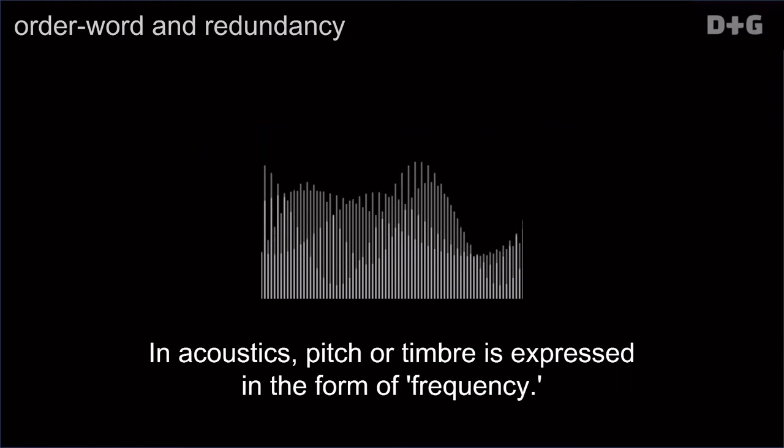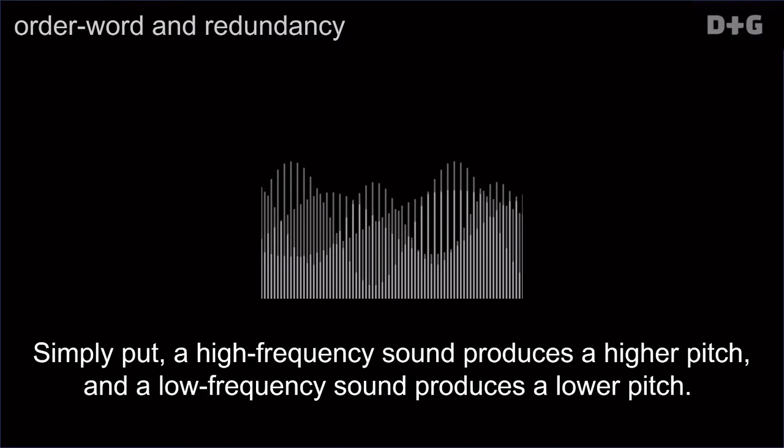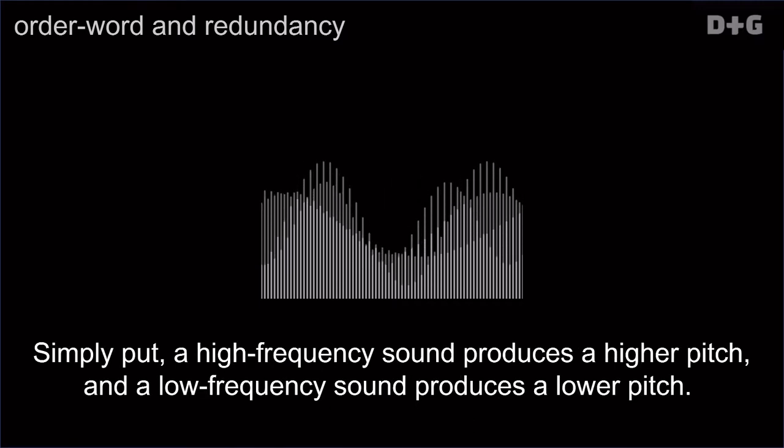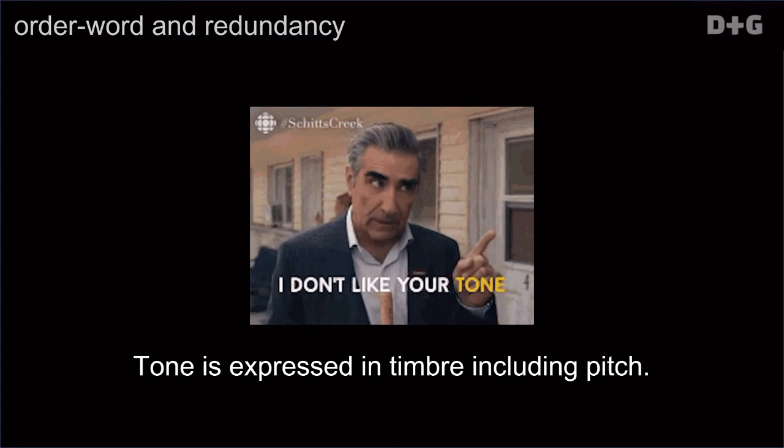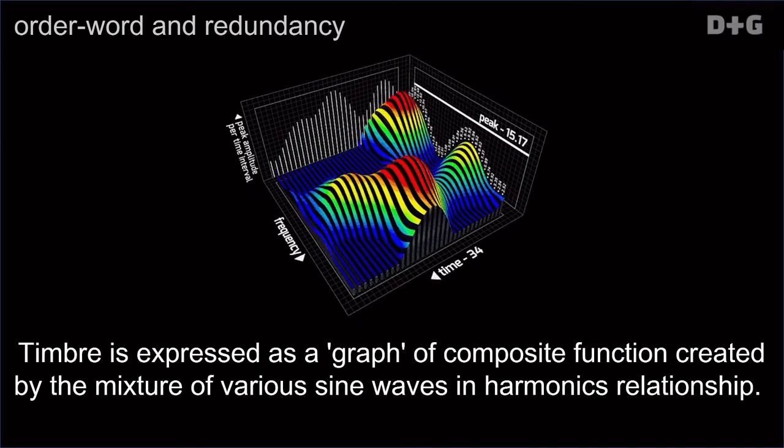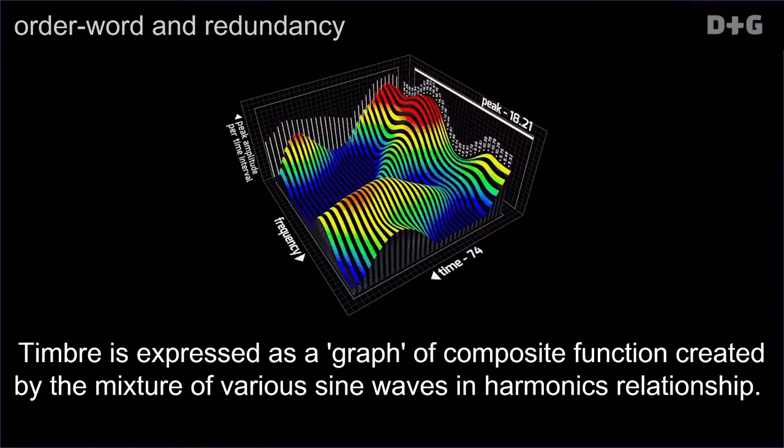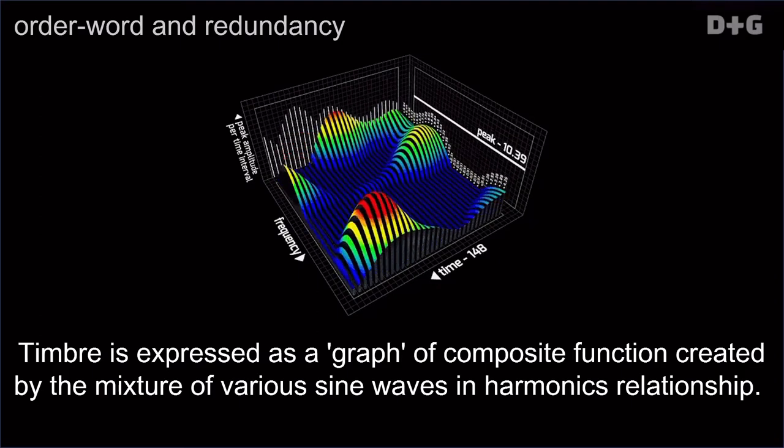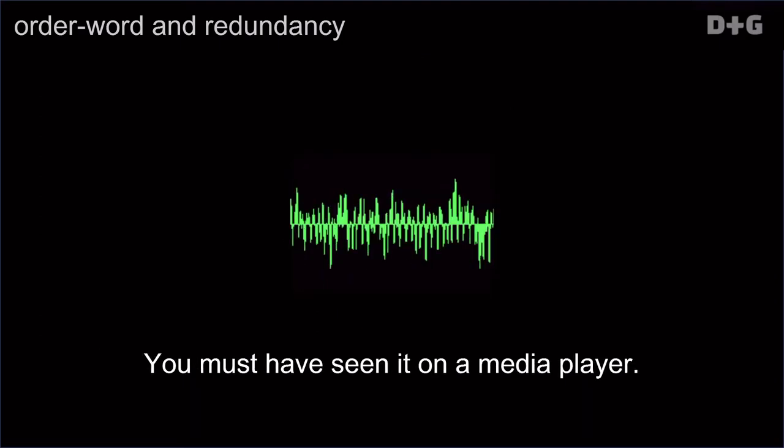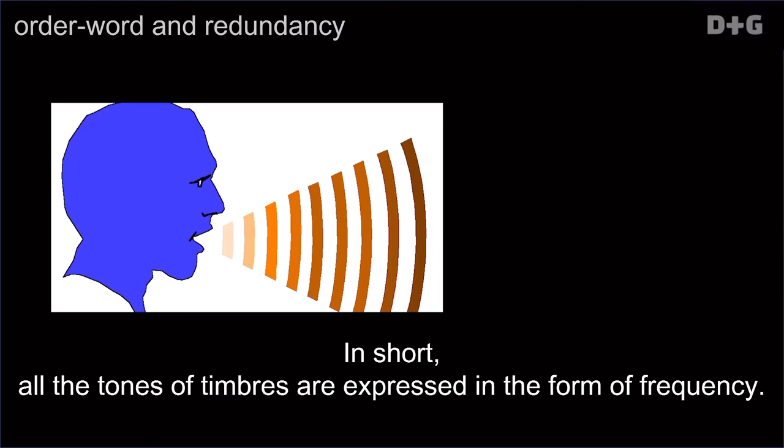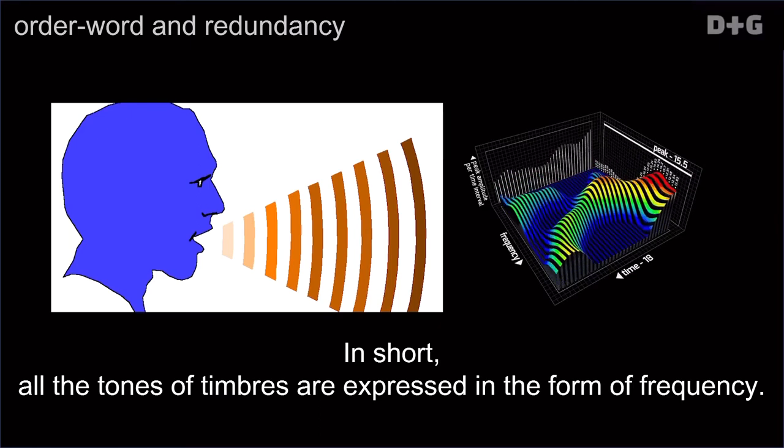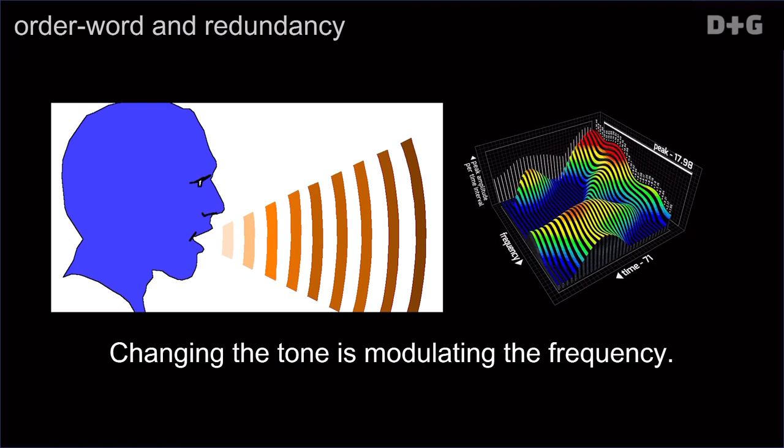In acoustics, pitch or timbre is expressed in the form of frequency. Simply put, a high-frequency sound produces a higher pitch, and a low-frequency sound produces a lower pitch. Tone is expressed in timbre including pitch. Timbre is expressed as a graph of composite function created by the measure of various sine waves and harmonics relationship. You must have seen it on a media player. In short, all the tones or timbers are expressed in the form of frequency. Changing the tone is modulating the frequency.